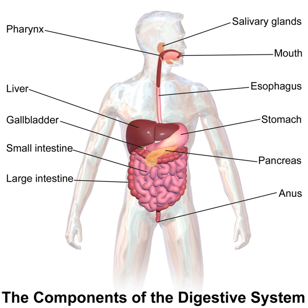Young elephants, pandas, koalas, and hippos eat the feces of their mother, probably to obtain the bacteria required to properly digest vegetation. When they are born, their intestines do not contain these bacteria — they are completely sterile. Without them, they would be unable to get any nutritional value from many plant components.